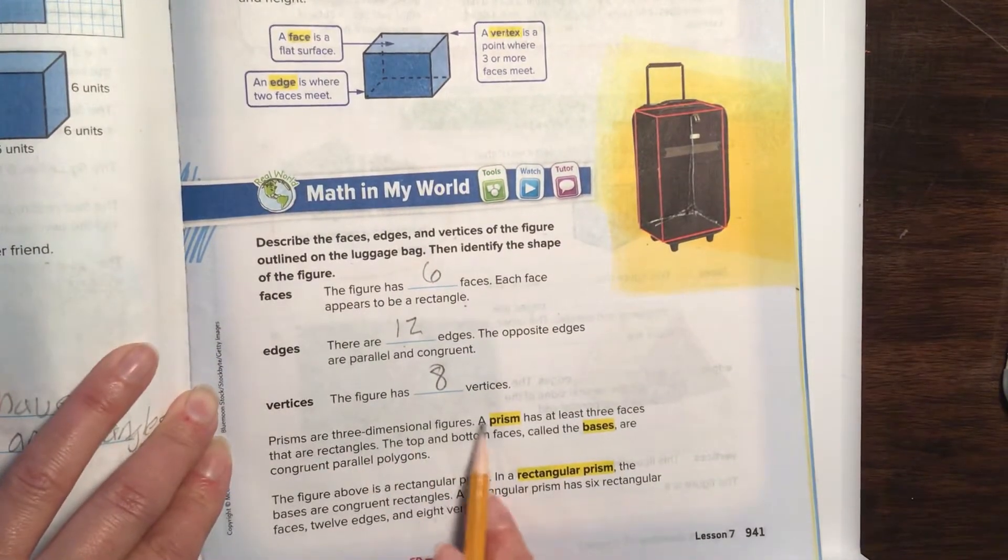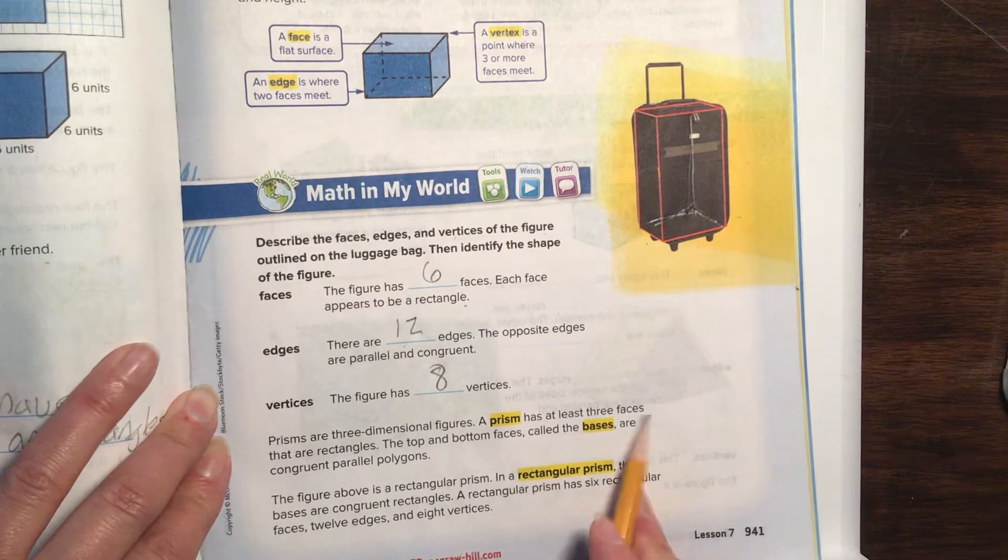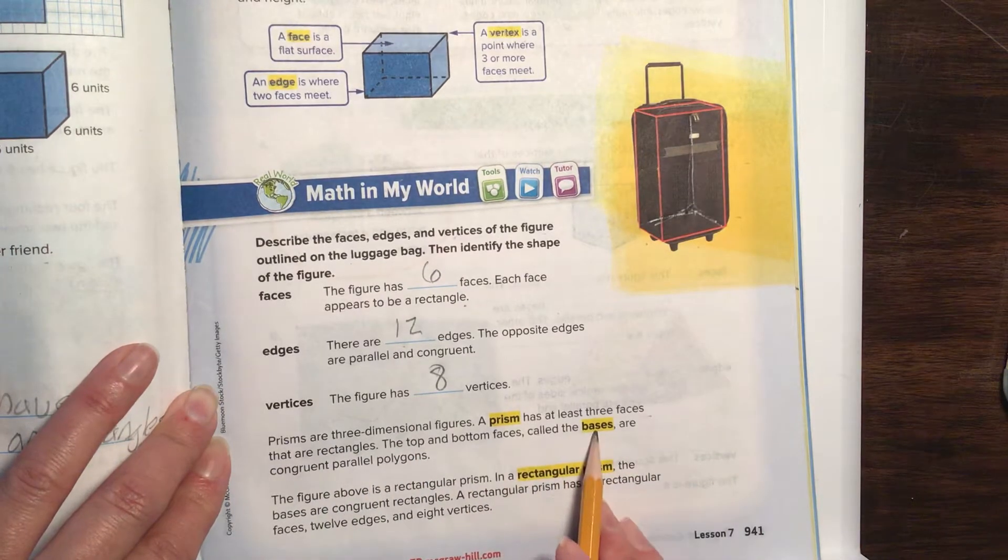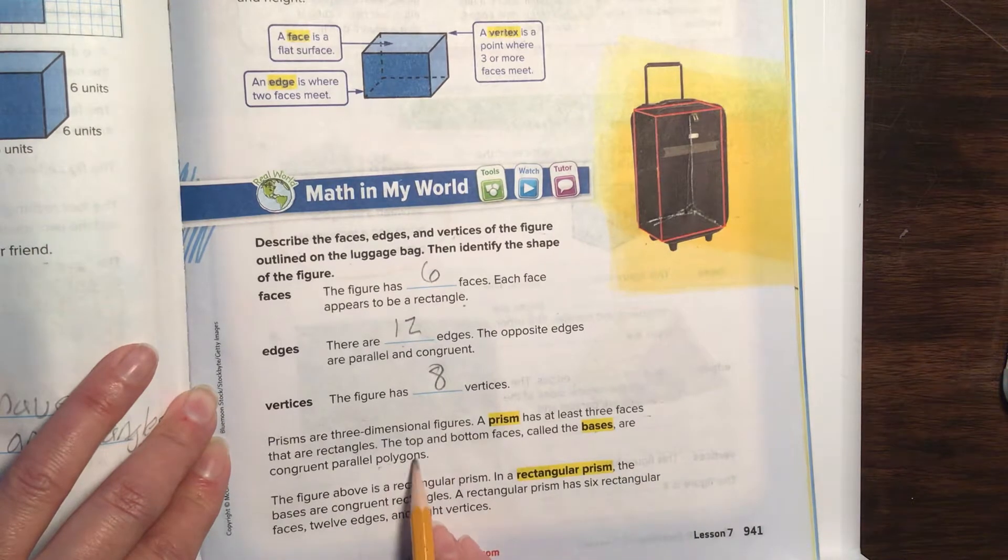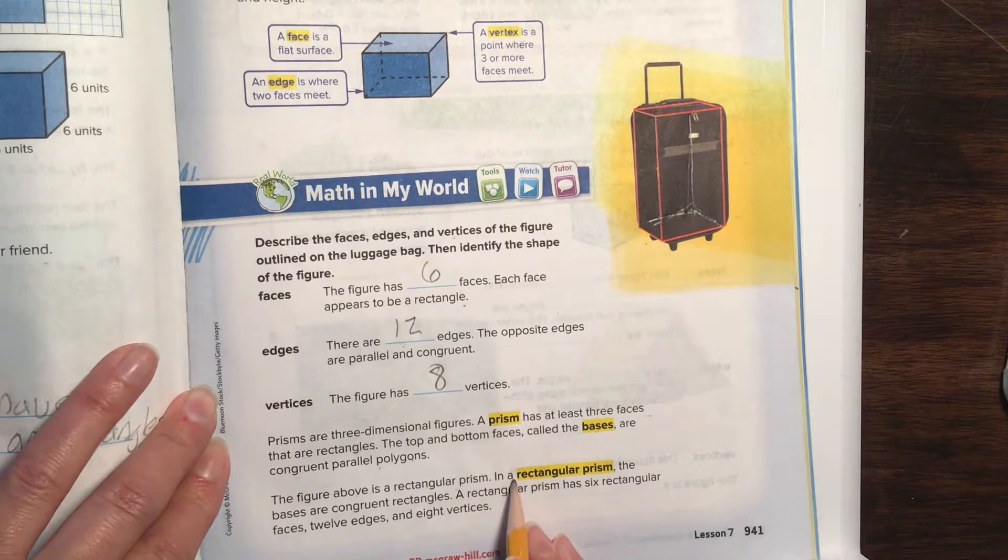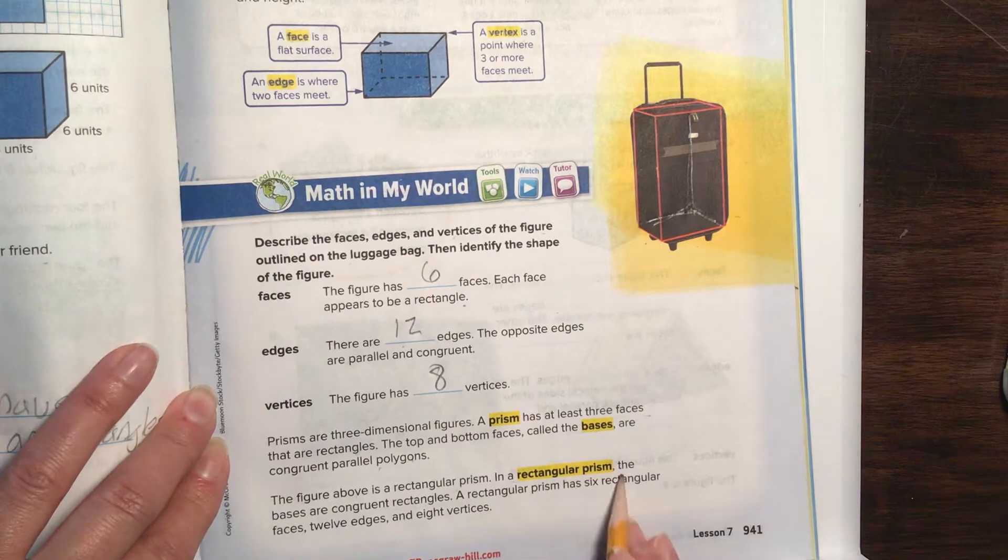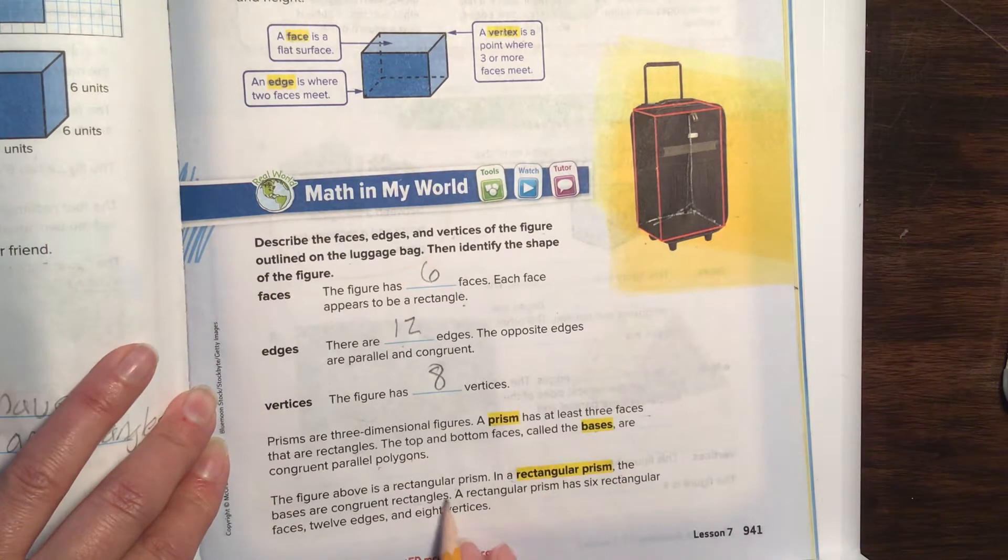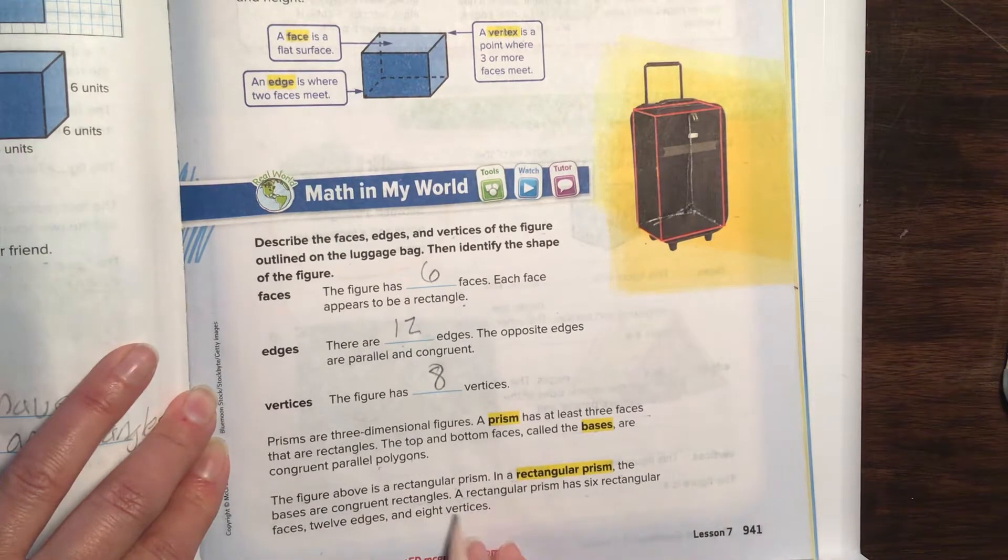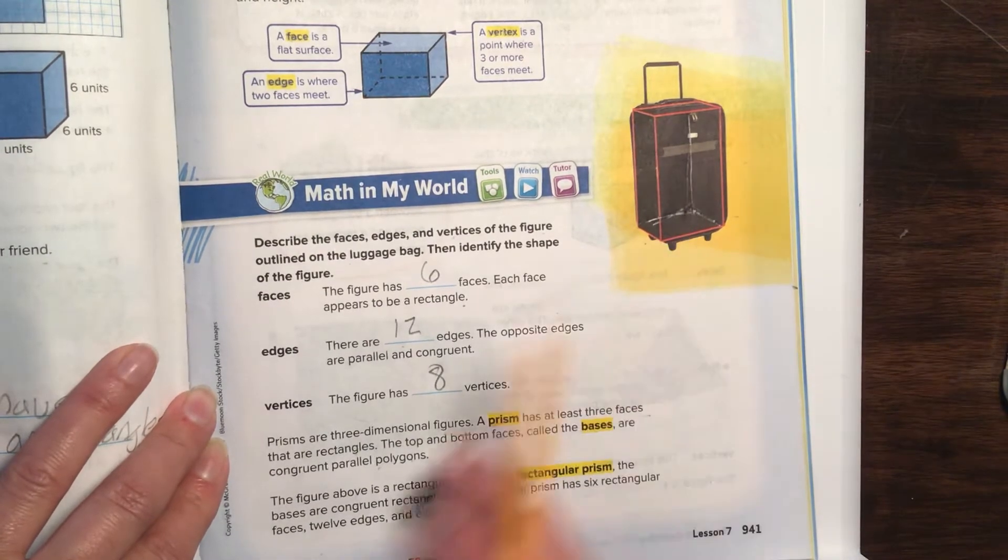Prisms are three-dimensional figures. A prism has at least three faces that are rectangles. The top and bottom faces are called bases—they're congruent parallel polygons. The figure above is a rectangular prism. In a rectangular prism, the bases are congruent rectangles. A rectangular prism has six rectangular faces, twelve edges, and eight vertices. Pretty much, they're saying that's a rectangular prism.